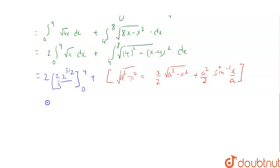Now, after putting the limits, we get 2 into 2 by 3, and when we put x equals 4, we get 8. And here, after putting the formula, we get x minus 4 by 2, into 4 square minus x minus 4 square under the root, plus 16 by 2 sin inverse x minus 4 upon 4, limit 4 to 8.